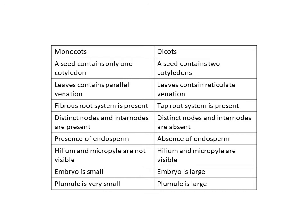In dicots, the hilum and micropyle are visible and are involved in fertilization. The embryo is small in monocots, while the plumule is large in dicots. The plumule helps in the development of the shoot system.